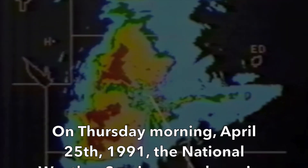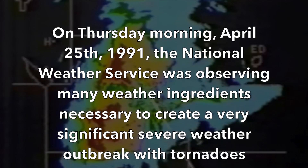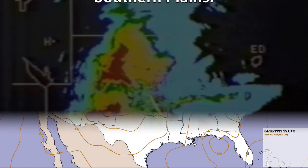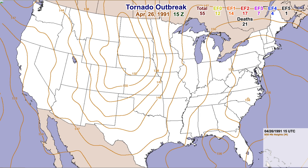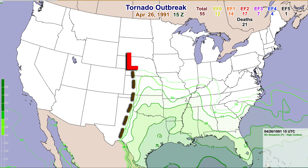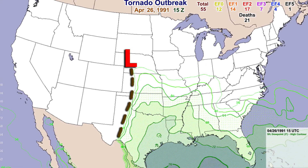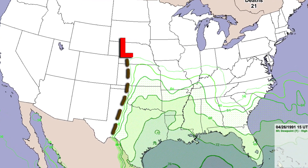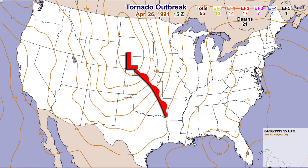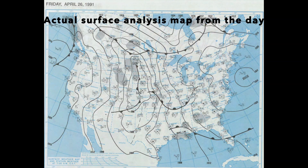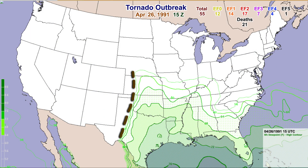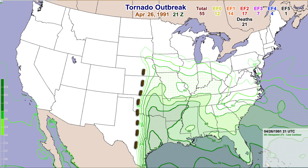On Thursday morning, April 25th, 1991, the National Weather Service was observing many weather ingredients necessary to create a very significant severe weather outbreak. On Friday morning, April 26th, 1991 at 7 AM CDT, low pressure at the surface was located over southwestern Nebraska. A dry line had extended southward into west Texas. To the east, dew point temperatures in the low to mid 60s spread over much of Oklahoma and Kansas, with a sharp drop-off into the 20s behind the dry line. A warm front extended from the surface low in Nebraska southeastward through Kansas and northeastern Oklahoma. As the morning progressed, the dry line moved rapidly eastward into western Oklahoma and central Kansas, replacing higher dew points in the 50s and 60s with much lower dew points due to the intrusion of drier air.